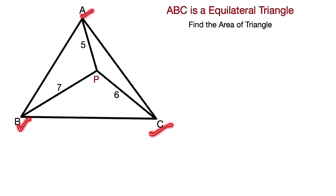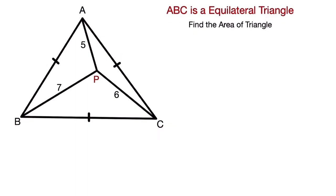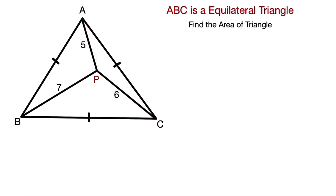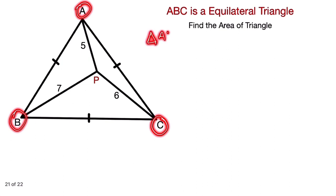So, this is our question. ABC is an equilateral triangle, which means all sides are equal. The lengths given are: BP = 7, AP = 5, and CP = 6. We have to find the area of triangle ABC.